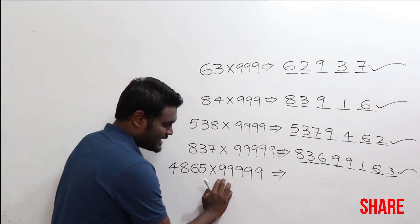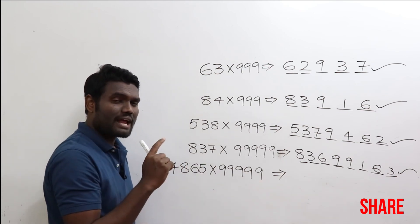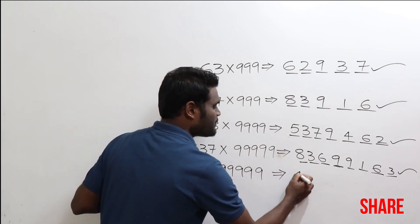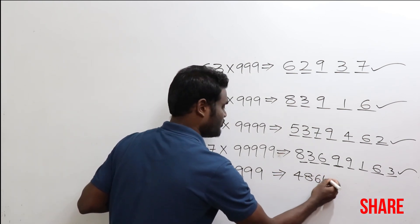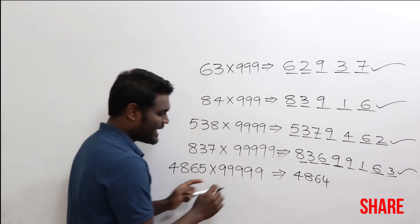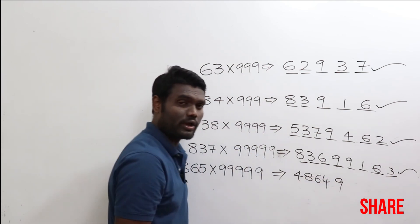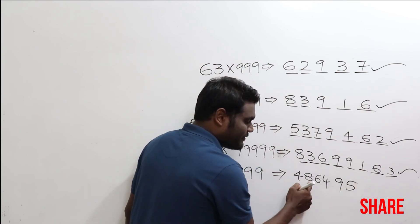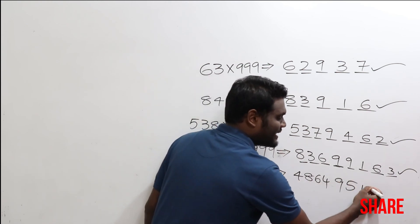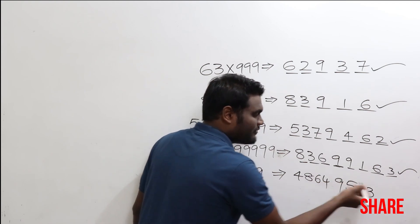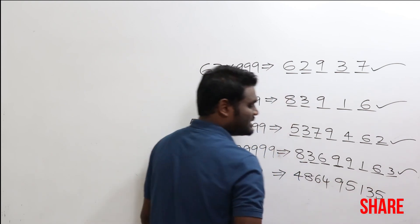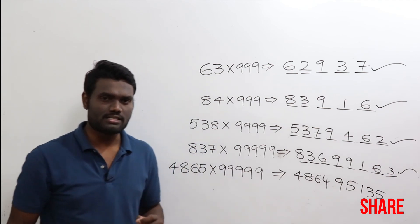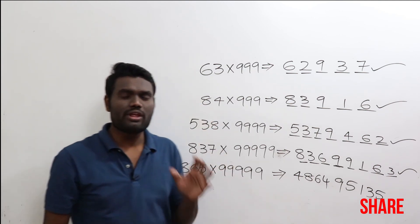Now 4865 times 99999 — four digits and five nines, so one nine extra. Do one less: 4865 minus 1 is 4864. Write that extra nine. Then for four more digits: for 4, add 5; for 8, add 1; for 6, add 3; for 4, add 5. So the answer is 486495135.